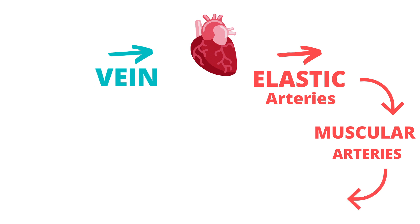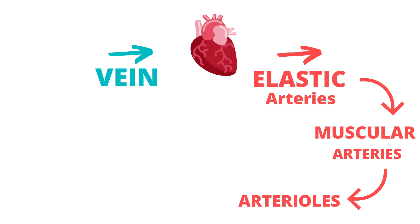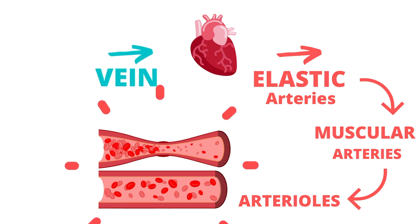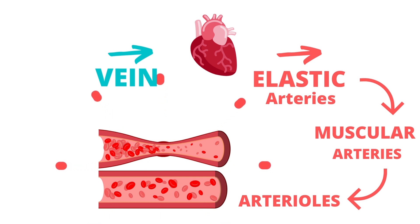Following the muscular arteries come the arterioles. These arterioles feed the capillary beds with blood. They are also special in that they have a sphincter circulating around them that helps them contract at certain points, and they are the most highly resistant blood vessels. Their ability to contract and expand is incredibly accommodating to the pressure of blood within them.